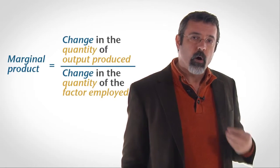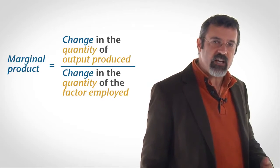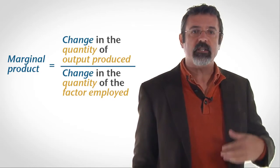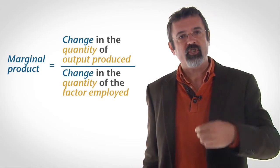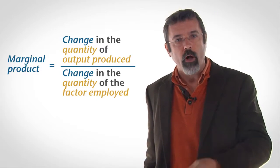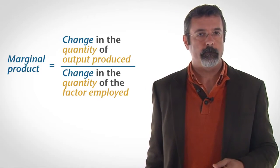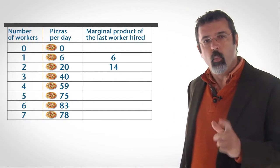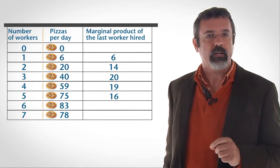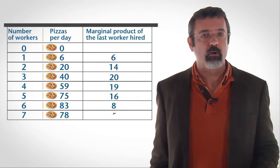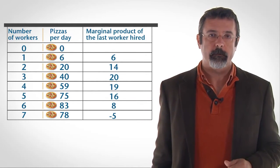In general, the marginal product is the change in the quantity of output produced divided by the change in the quantity of the factor employed. By observing what happens to the quantity of output as we add each worker, we can calculate the marginal product of each worker.